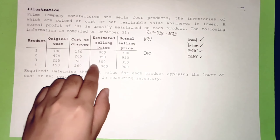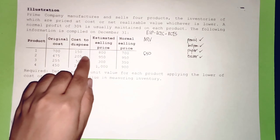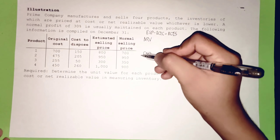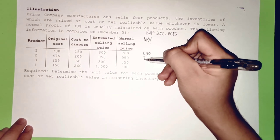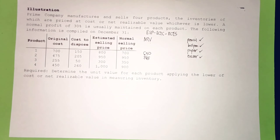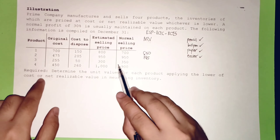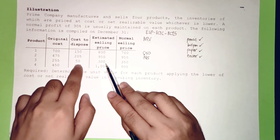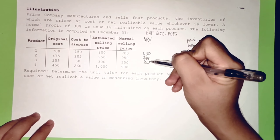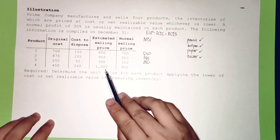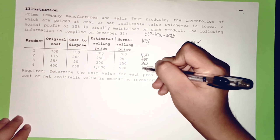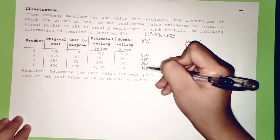Product 2: ₱950 − ₱205 = ₱745. Product 3: ₱300 − ₱50 = ₱250. Product 4: ₱1,000 − ₱260 = ₱740.